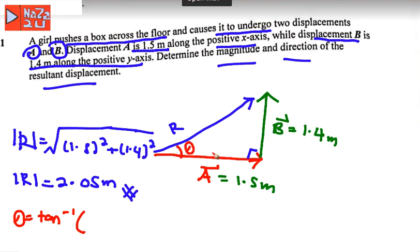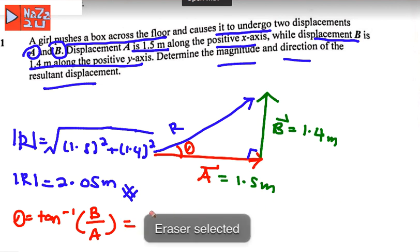The tangent theta here is equal to B divided by A. B divided by vector A. And B here is equal to 1.4, and A is 1.5.